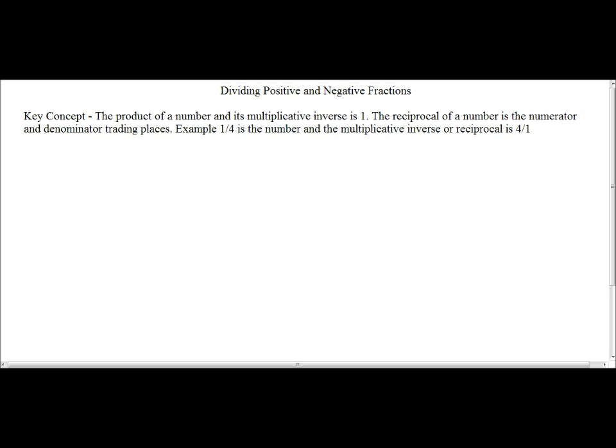Let's try and find a couple multiplicative inverses. Example, if we have, let's say, a negative 5 and 2 thirds and we want to find the multiplicative inverse. Well, first, we want to write this as an improper fraction.